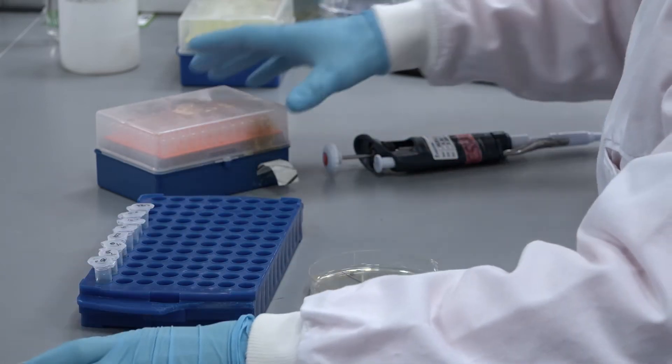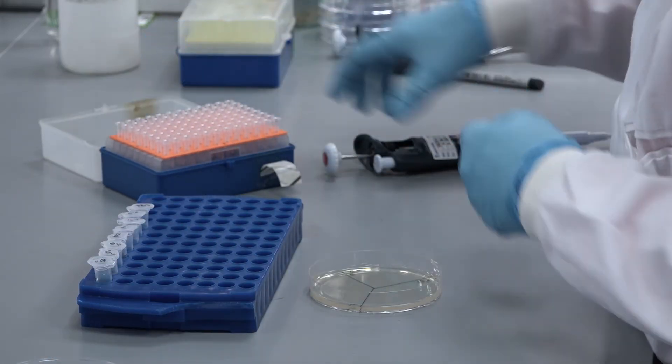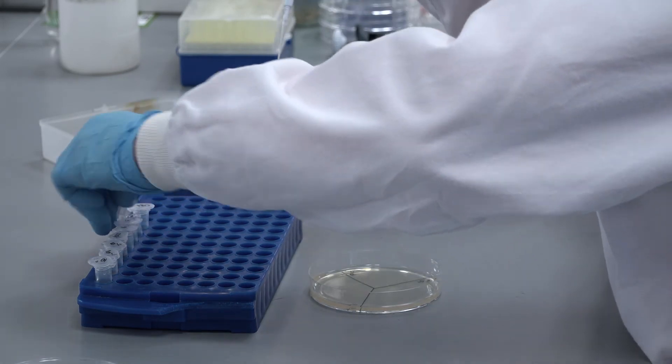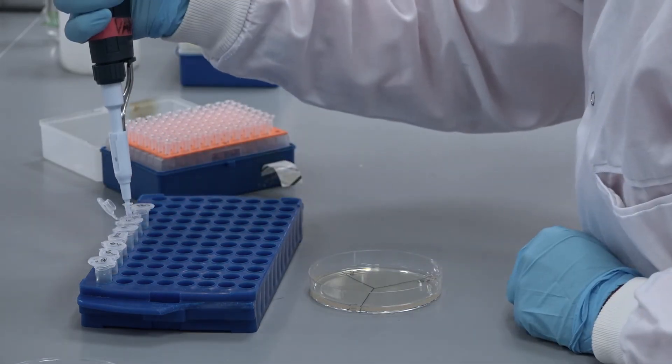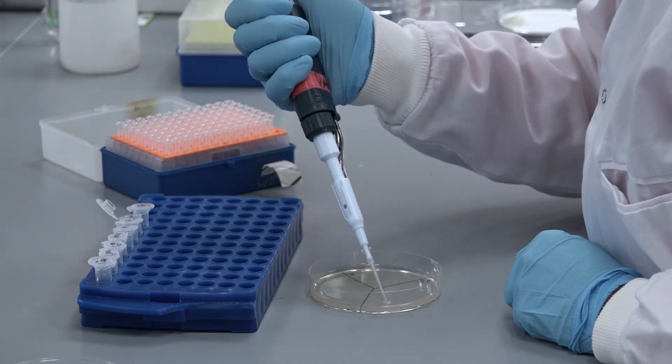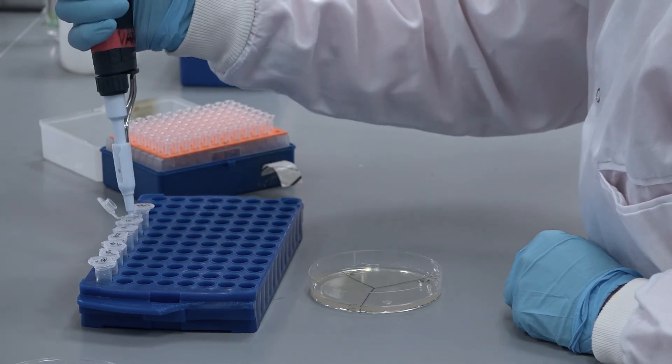To measure the actual doses injected into the larvae, plate out a dilution series of each dose on LB agar plates down to the minus 6 dilution and measure the CFU per mil.